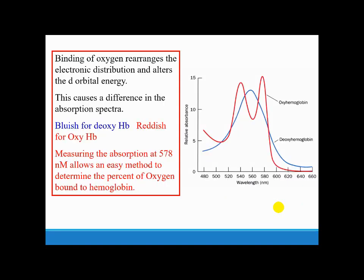Binding of oxygen along the electronic distribution alters the d-orbitals. This causes difference in the absorption spectra. Blue is for deoxyhemoglobin and red is for oxyhemoglobin. Measuring the absorption at 578 nm allows an easy method to determine the presence of oxygen bound to hemoglobin. This is the basic difference between the bonded and non-bonded hemoglobin variety.